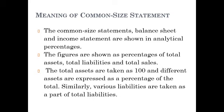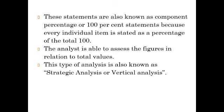One benchmark is considered. In the case of the balance sheet, the total asset or total liabilities will be the benchmark. In the case of the income statement, the benchmark is sales. Total sales is considered as 100% and all items are expressed as a percentage of sales. In the balance sheet, total assets are considered as 100 and different assets are expressed as a percentage of the total. These statements are also known as component percentage or 100% statements because every individual item is stated as a percentage of the total.